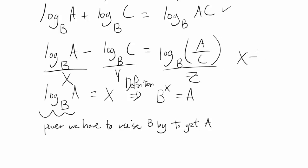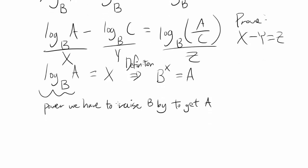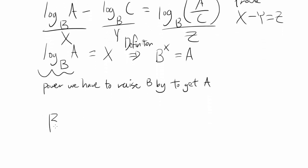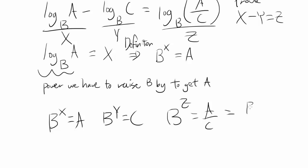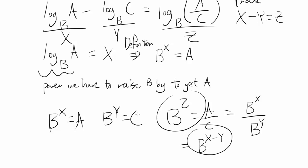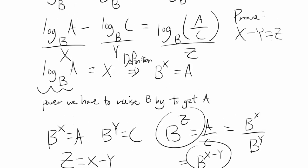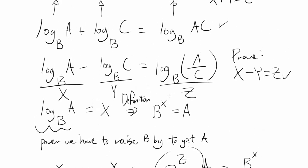So we want to prove X minus Y is Z. We know B to the X is A, B to the Y is C, and B to the Z is A over C. We know A is B to the X and C is B to the Y, and so A over C is equal to, using properties of exponentiation, B to the X minus Y. So B to the Z is equal to B to the X minus Y. Therefore Z is equal to X minus Y, and we are done.